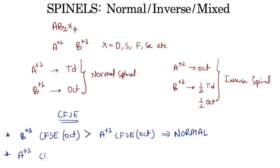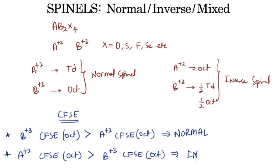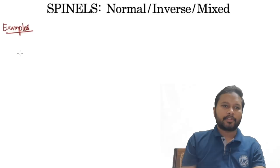So to summarize: if the CFSE of the tripositive cation in the octahedral field is greater than the dipositive cation's CFSE in the octahedral field, it's a normal spinel; the reverse is an inverse spinel. Let's take some examples to understand this, and later we'll look at actual exam questions.